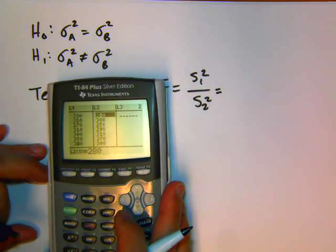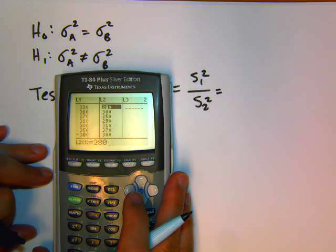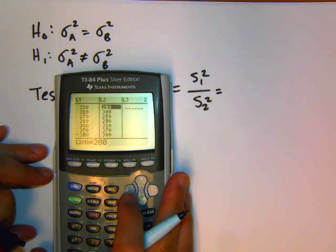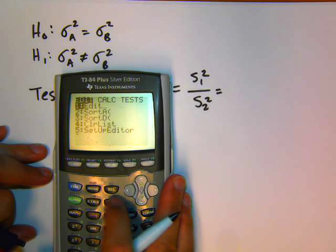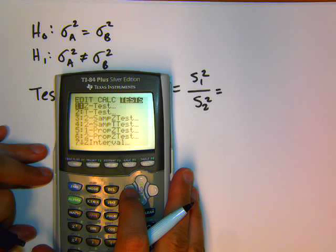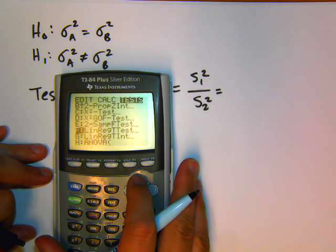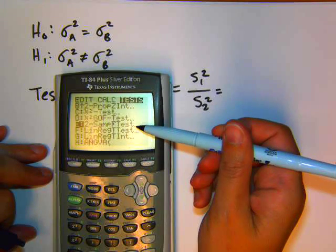We don't have the actual values for S1 and S2. There's a couple different ways to do that. I could do one-var stats for each one of my groups separately to find that. But I'm going to go straight to my shortcut key. So there's a stat menu here. I'm going to go to the test menu. And it's towards the bottom. It's called 2-SAMP-F-Test.